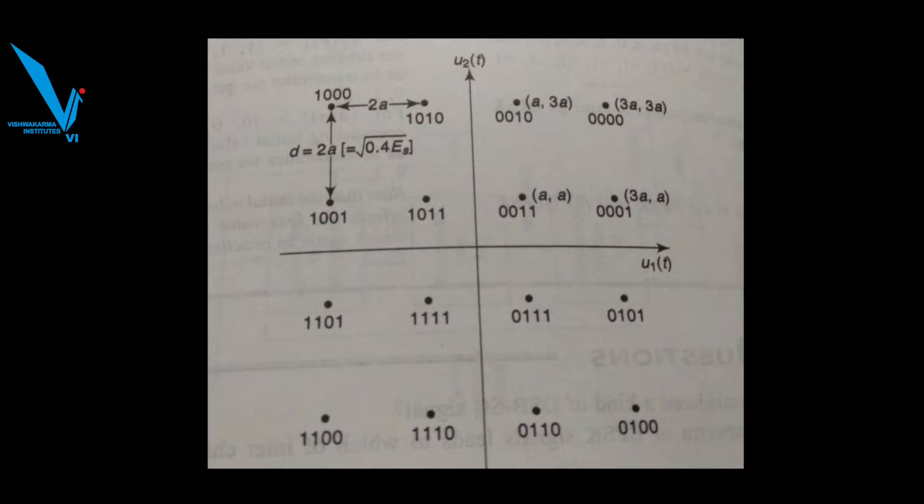So what is the indication of this? When the distance is less, the noise and interference is going to increase, that means the error rate with this method is going to increase. In case of QPSK, the distance between two signal points was equal to 2√Eb. Here in this case, it is 2√(0.1Es), so here the error rate is higher.